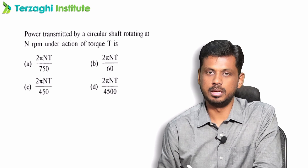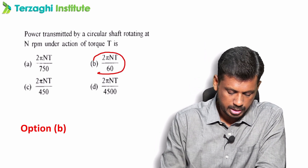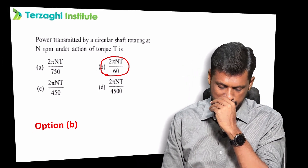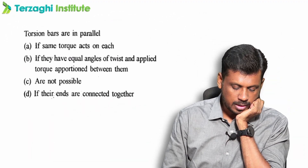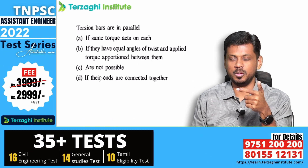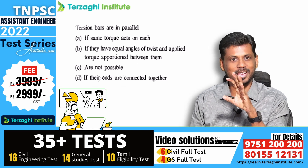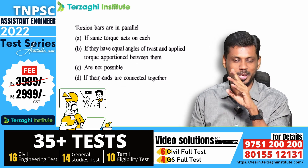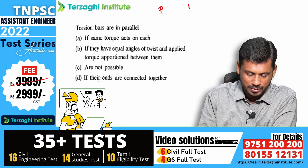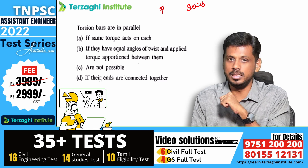Third question: power transmitted by a circular shaft. It's 2πNT by 60. Power is 2πNT by 60. Torsion bars and R are parallel — it's easy to do. One shaft is parallel or series.